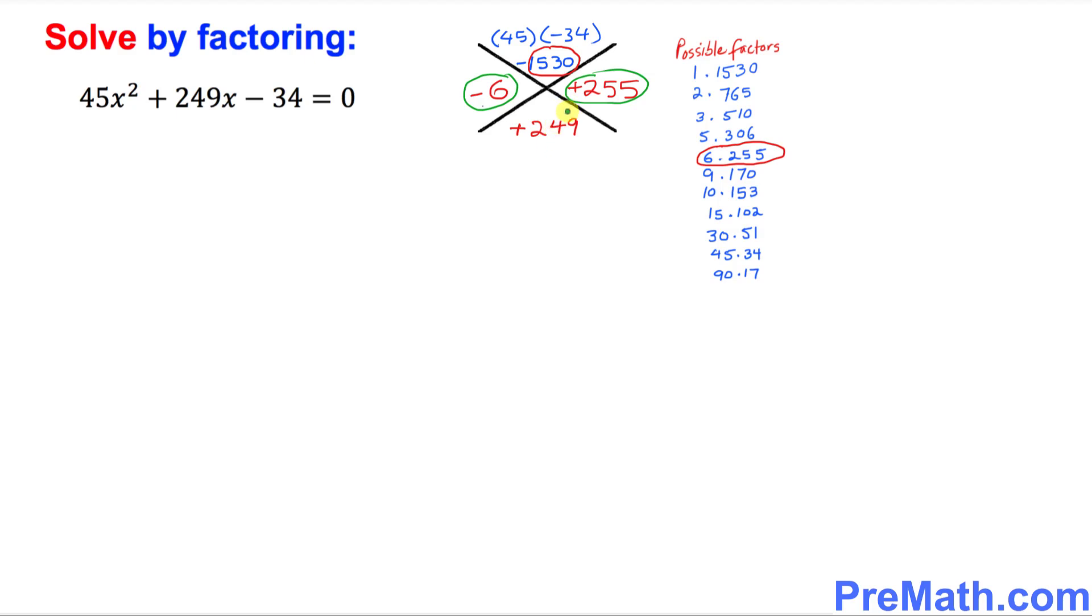Now one more thing you might be wondering is there any other possible alternative way to find the factors because this method is very hectic. Let me show you another method now. I want you to just put down these numbers over here. Just look at this thing, 45 and 34. Don't worry about this negative sign. I want you to just put it right up here, 45 times this 34.